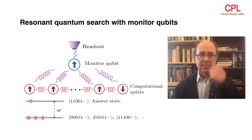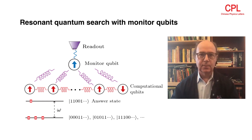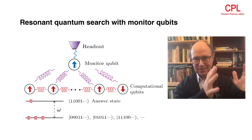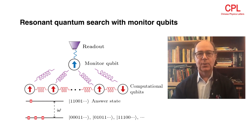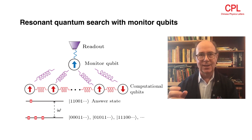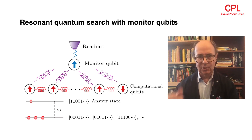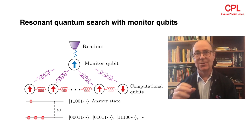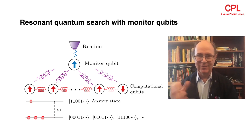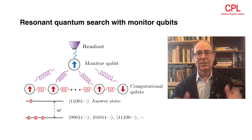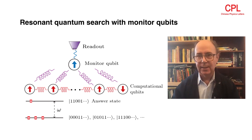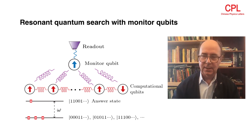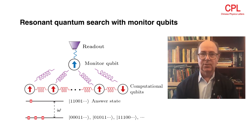By measuring the monitor qubit without measuring the computational qubits, you can tell whether the computation has progressed. And if it hasn't, you can turn it off and start all over again. If it has, you keep going. So that's one way that you can use monitor qubits to advance the calculation.